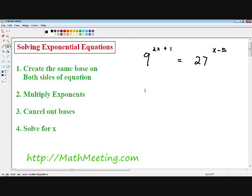So the first thing I'm going to do is rewrite my 9 as 3 squared, and we can't forget to put the 2x plus 1 exponent. That equals, now I'm going to rewrite my 27 as 3 cubed, and I can't forget about my x minus 5 exponent. Now we have completed step number one. We have created the same base, a base of 3 on both sides of the equation without changing it at all.